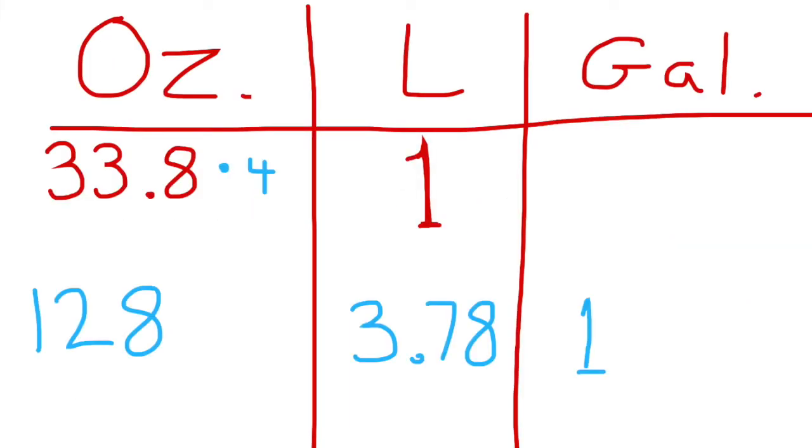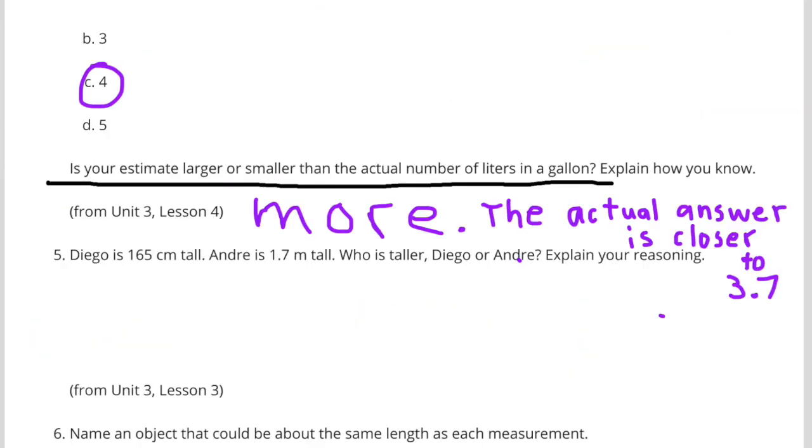Well, when I actually did the division, the answer was closer to 3.7. So is my estimate larger or smaller than the actual number? Yes, my answer was more than the actual number, since my estimate was 4, and the actual number was closer to 3.7.